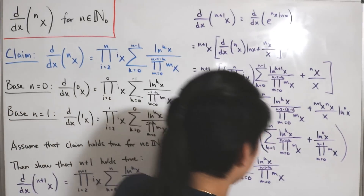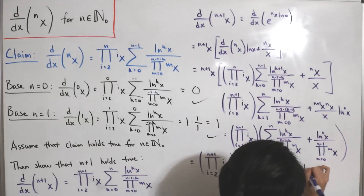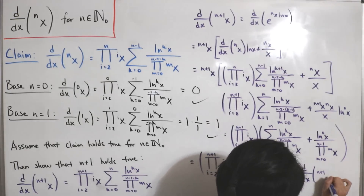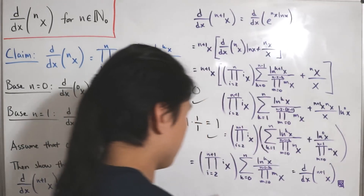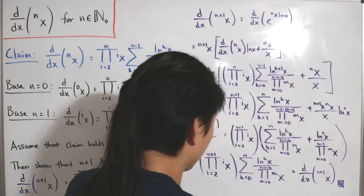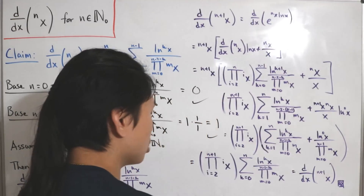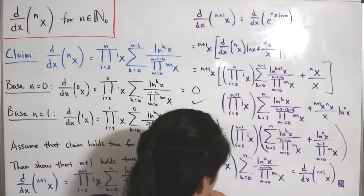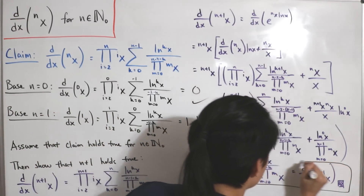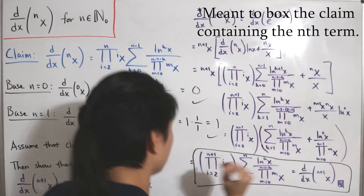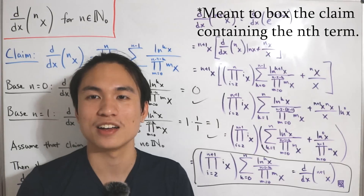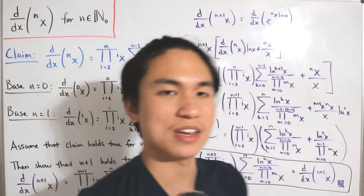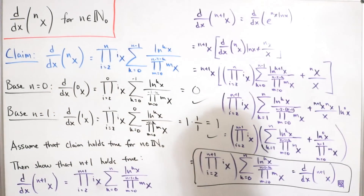This equals the derivative of the (n+1)th tetration of x, completing the proof. We have found the closed form for the derivative of the nth tetration of x for all natural numbers — a pretty cool result.